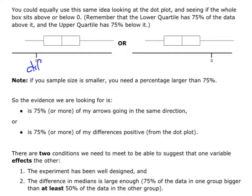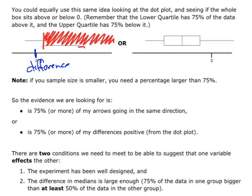Let's remind ourselves about the data. If I take the dot plot of the difference and I look for where 0 is, I want to say: is more than 75% of the data above it? If I go from my lower quartile and shade in all the data above that lower quartile, all of that data is 75%. So if more than 75% of the data is above 0, then I've got enough evidence — more than 75% of my arrows will be going in that direction.